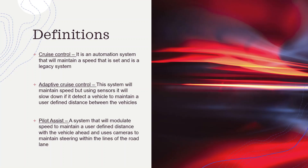The third system, Pilot Assist, will do the same thing as Adaptive Cruise Control — it maintains the speed and will vary that speed to keep a set distance. Lastly, it uses the cameras to steer the steering wheel. You still have to keep your hands on the steering wheel, but it will help steer it for you.